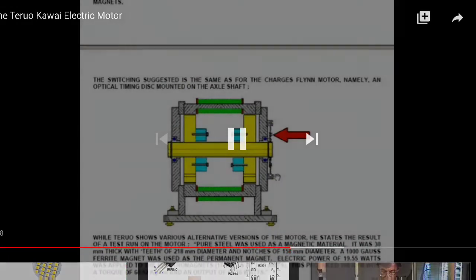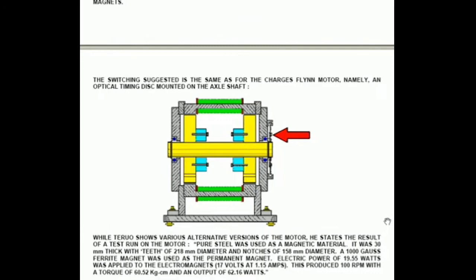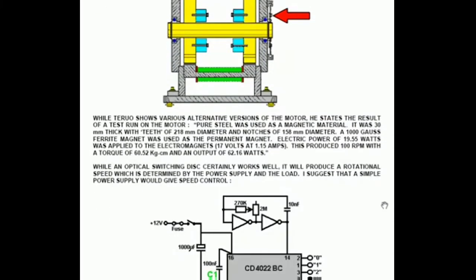Versions of the motor. He states that the result of a test run on his motor using pure steel as a magnetic material steel was 30 millimetres thick with teeth of 218 millimetre diameter and notches of 158 millimetre diameter. A 1000 Gauss ferrite magnet was used as the permanent magnet. Electric power of 19.55 watts was applied to the electromagnets that is 17 volts at 1.15 amps. This produced 100 revs for a minute with a torque of 60.52 kilogram centimetres and that is an output of 62.16 watts.